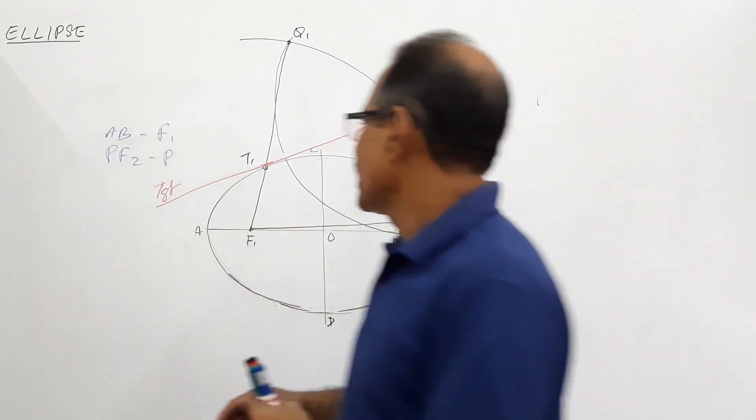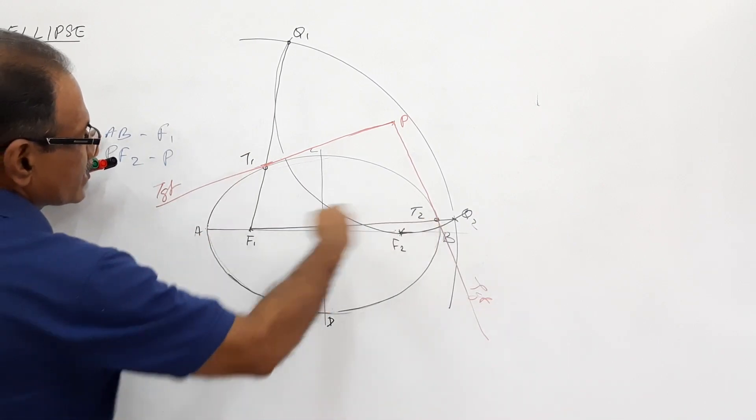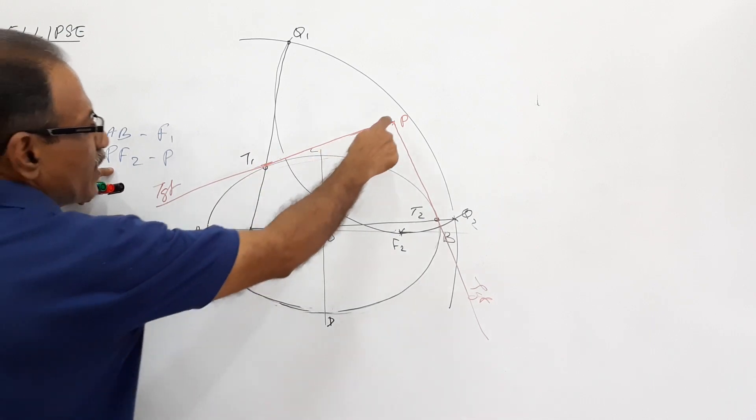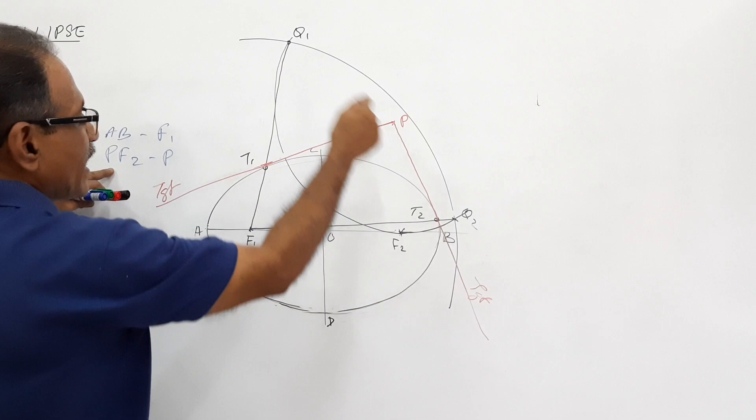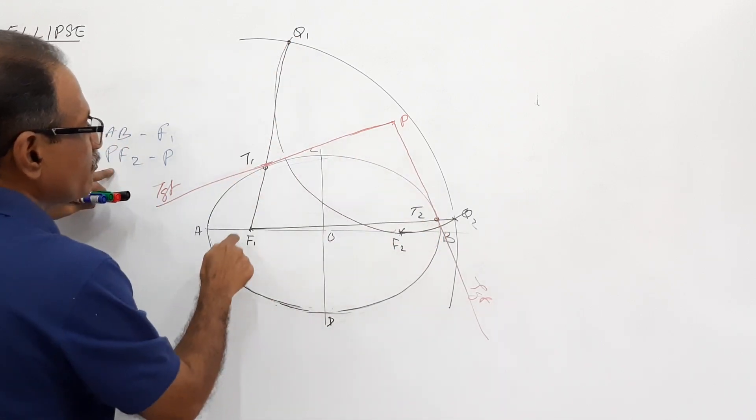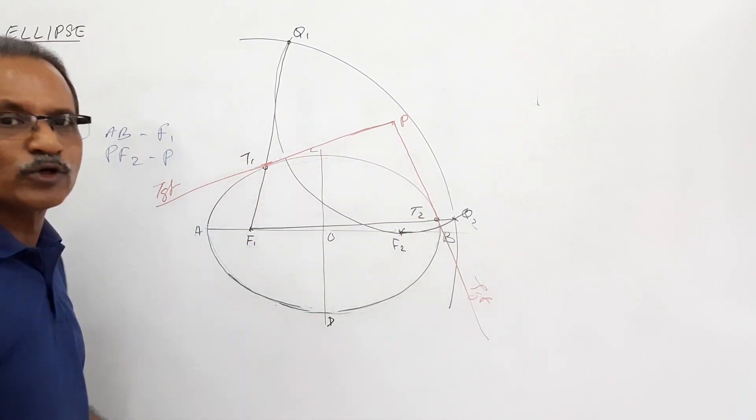AB as radius, F1 as center, draw an arc. PF2 as radius, P as center, draw another arc. They meet at Q1 and Q2. Join Q1 and Q2 to F1. They cut the ellipse at T1 and T2. PT1 and PT2 are two tangents from P.